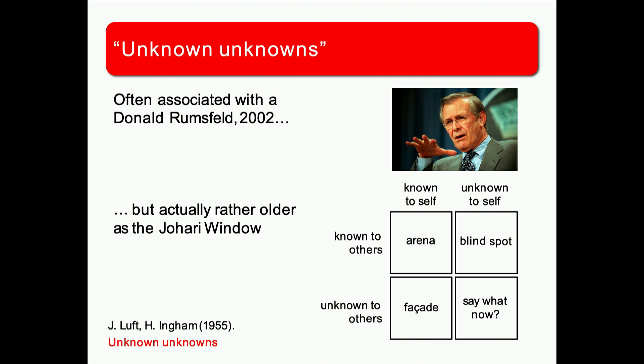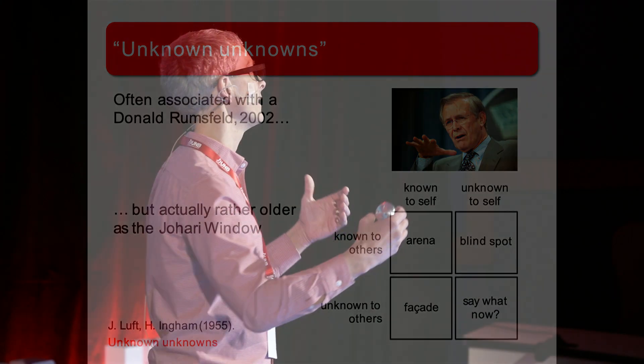The Johari Window has four areas. Top left: things you know about yourself that other people know too — that's the arena. Bottom left: things you know about yourself that other people don't — a facade. Top right: things you don't know about yourself that other people do — that's a blind spot. And bottom right — where I'm going to argue all the good stuff in learning takes place — unknown unknowns: things that seem completely unfamiliar at first blush.